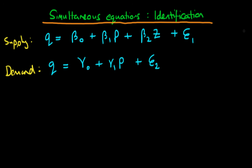We're assuming that beta 1 is greater than 0 because the supply curve actually slopes upwards. And we're supposing that gamma 1 is going to be less than 0 because the demand equation typically slopes downwards.